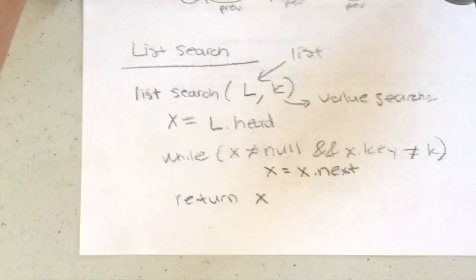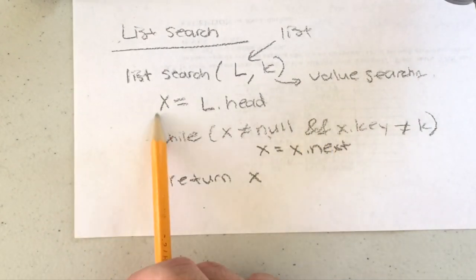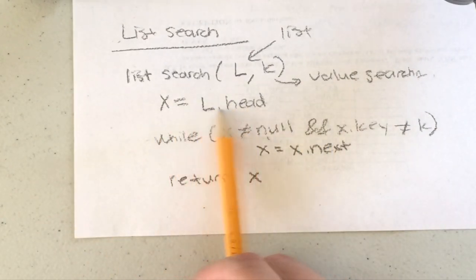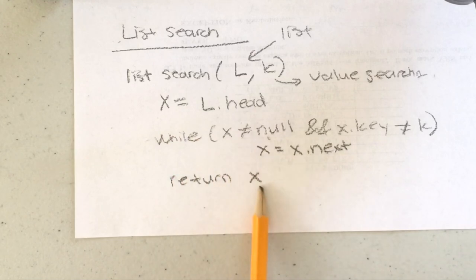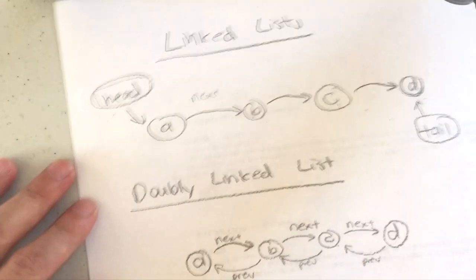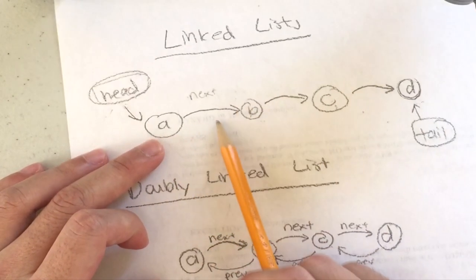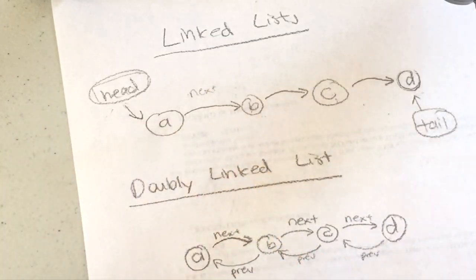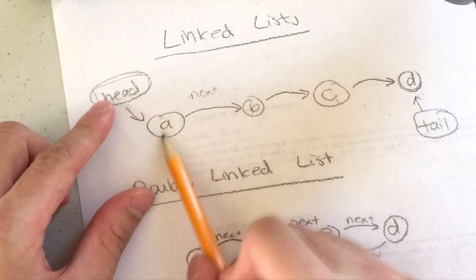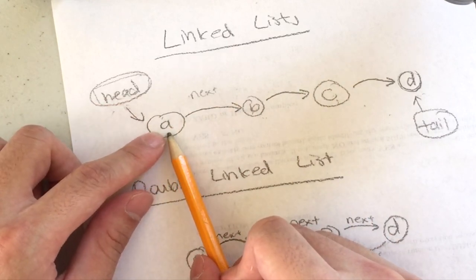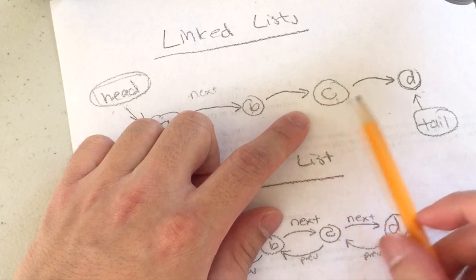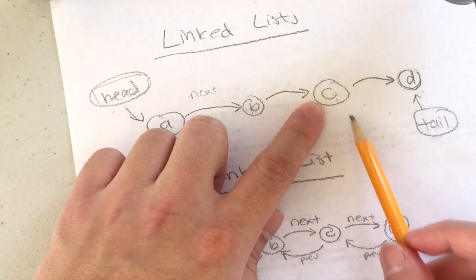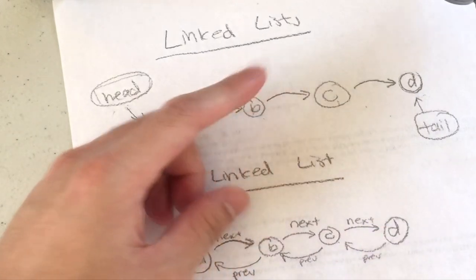So what the pseudocode is doing: you create variable X and point it to the head — the beginning of the list. While X is not null and the key doesn't match what you're searching for, you keep going to next. So starting at A, I go to B, then C — C equals C, so I return true. That's the search.